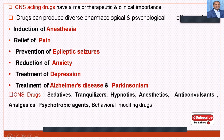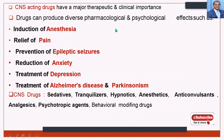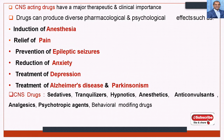CNS drugs have major therapeutic and clinical importance because many times anesthetics, centrally acting pain killers, and many other drugs come under this class. These drugs can produce diverse pharmacological and psychological effects. The goals include use as anesthesia, relief of pain (morphine), prevention of epileptic seizures, reduction of anxiety, treatment of depression, Alzheimer's disease, and Parkinson's disease. CNS drugs are classified as sedatives, tranquilizers, hypnotics, anesthetics, anticonvulsants, analgesics, psychotropic drugs, and mood-changing or behavioral-modifying drugs.